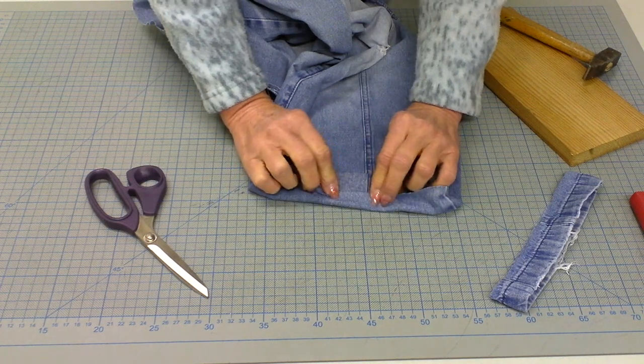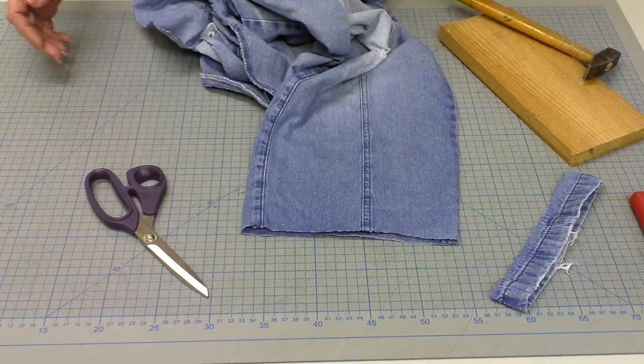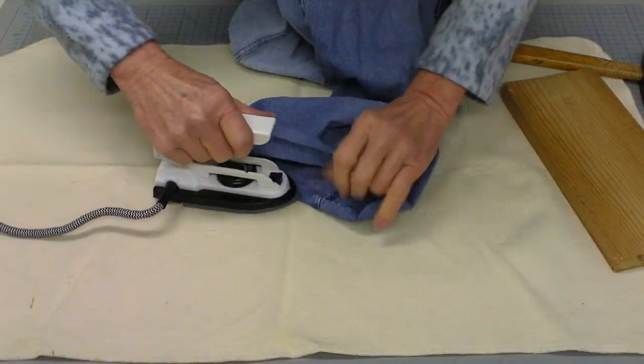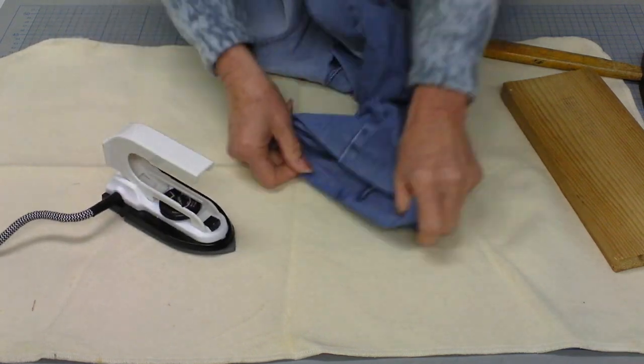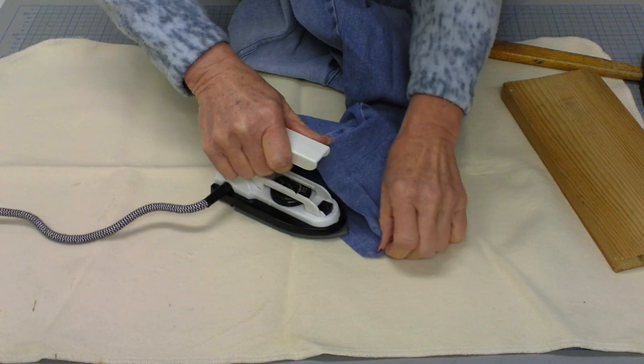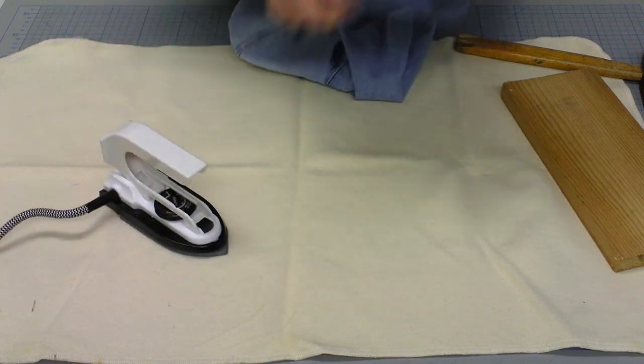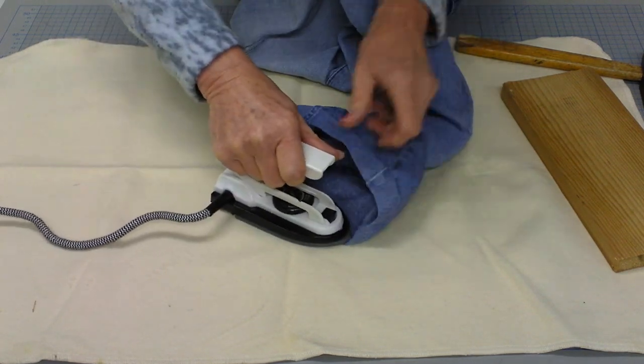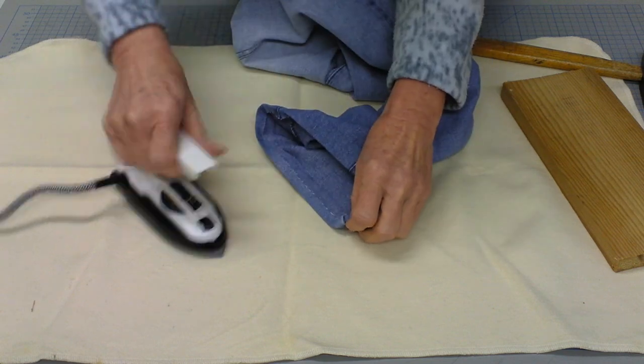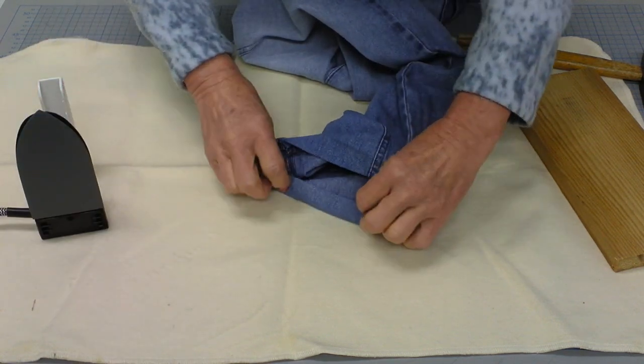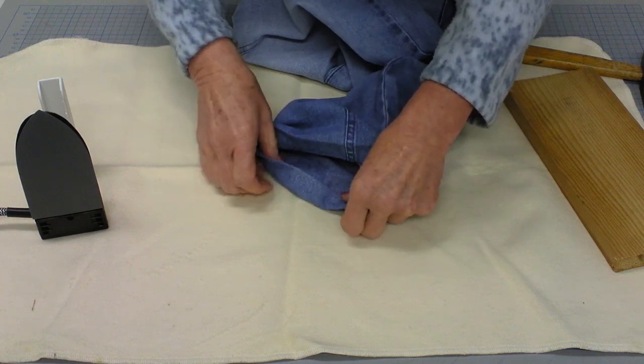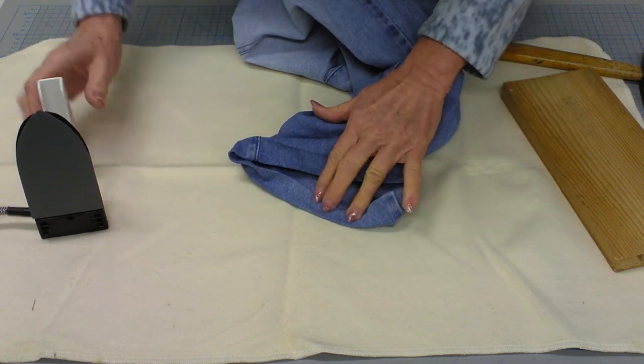So I get my ironing out, prepare everything and I first of all just iron one centimeter on the bottom over. And if this would be a skirt or a dress I would do exactly the same, or if I would have any kind of other seam that seems to be too thick for me, then I can also iron over that to slightly flatten it already with the ironing.